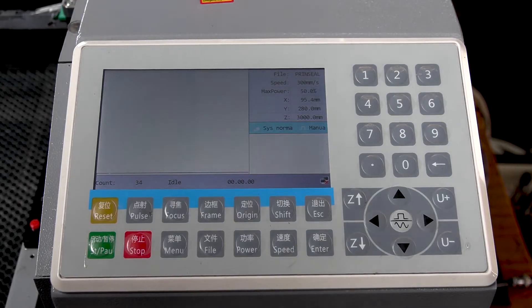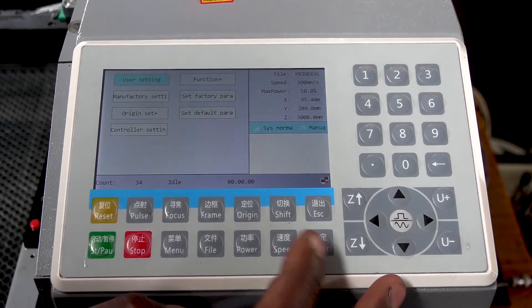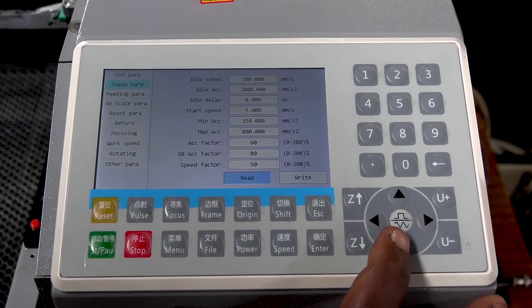On the controller, press menu. Enter into user setting and scroll down to rotating.